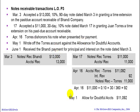We'll debit the allowance for doubtful accounts for $11,092 — the whole amount — and credit accounts receivable Torres for $11,092.